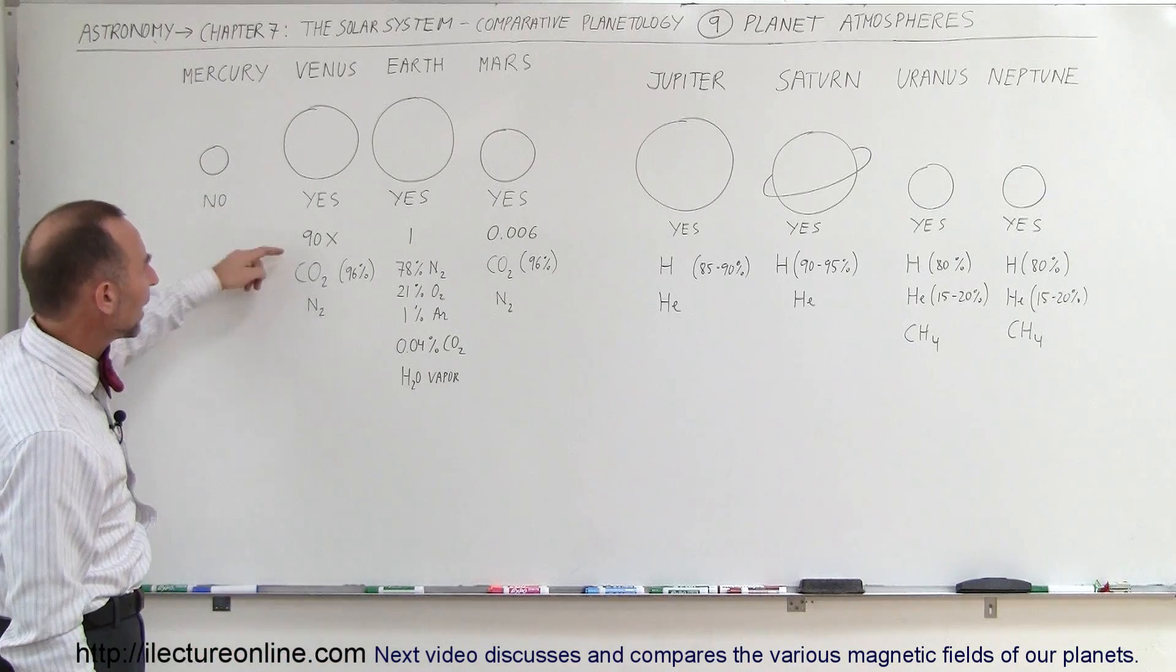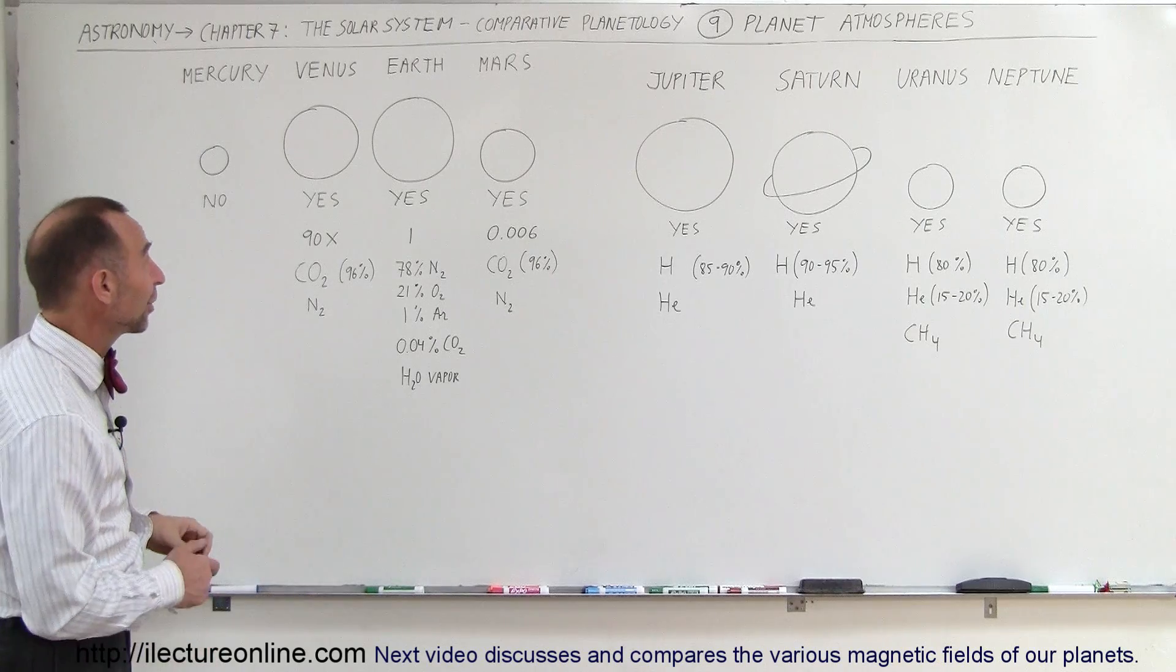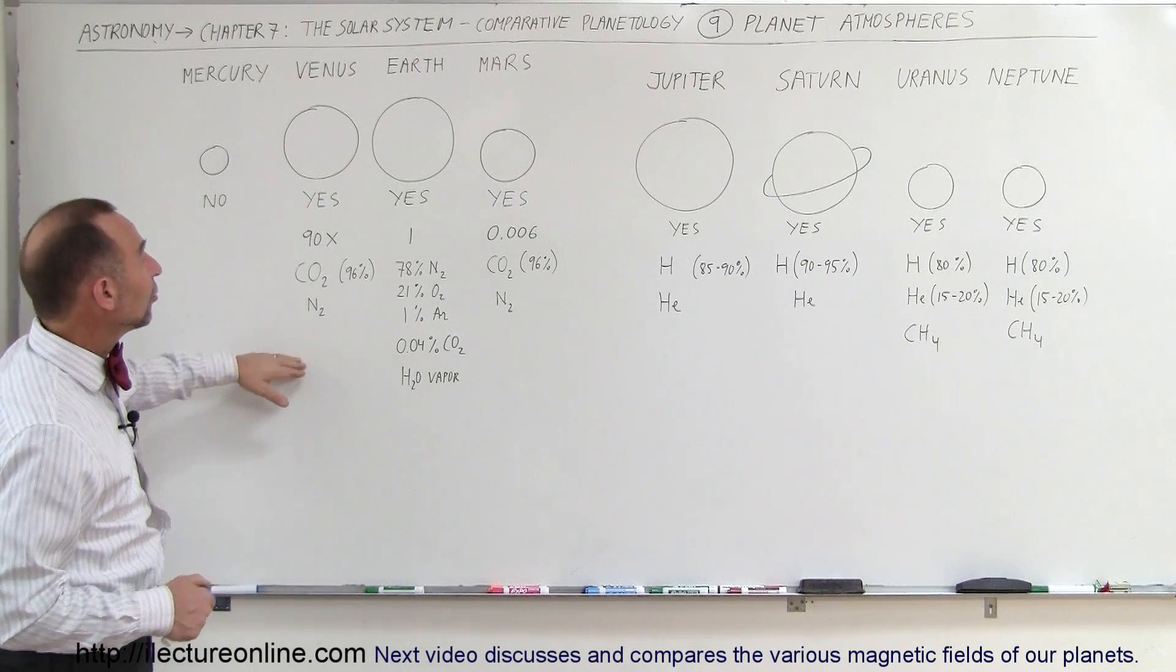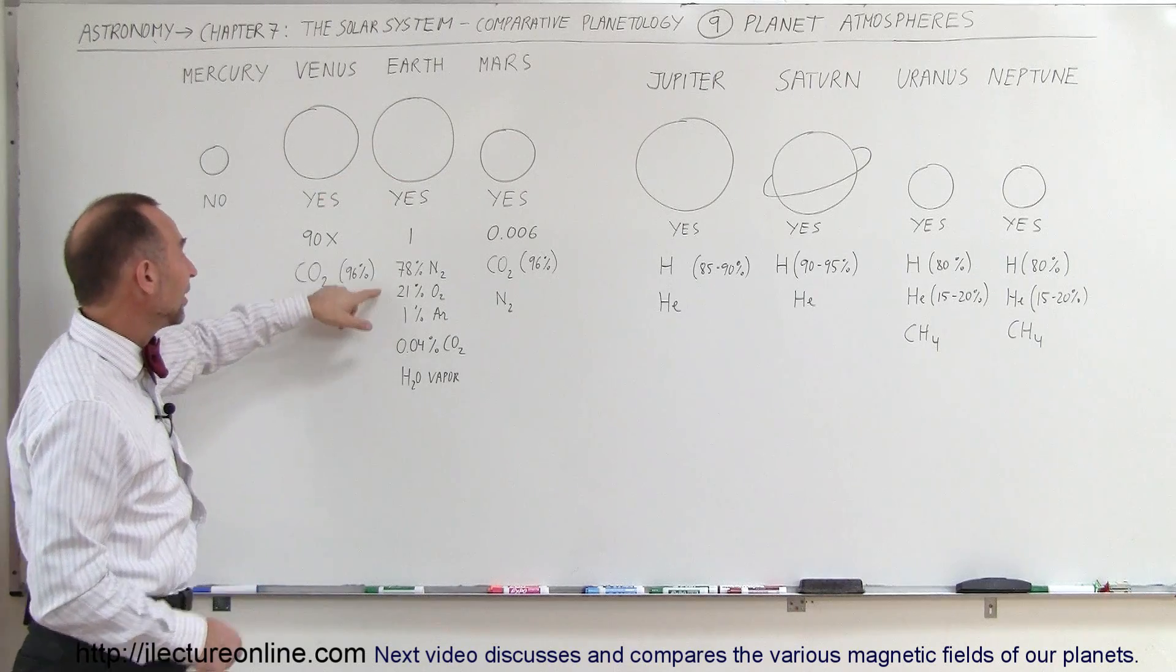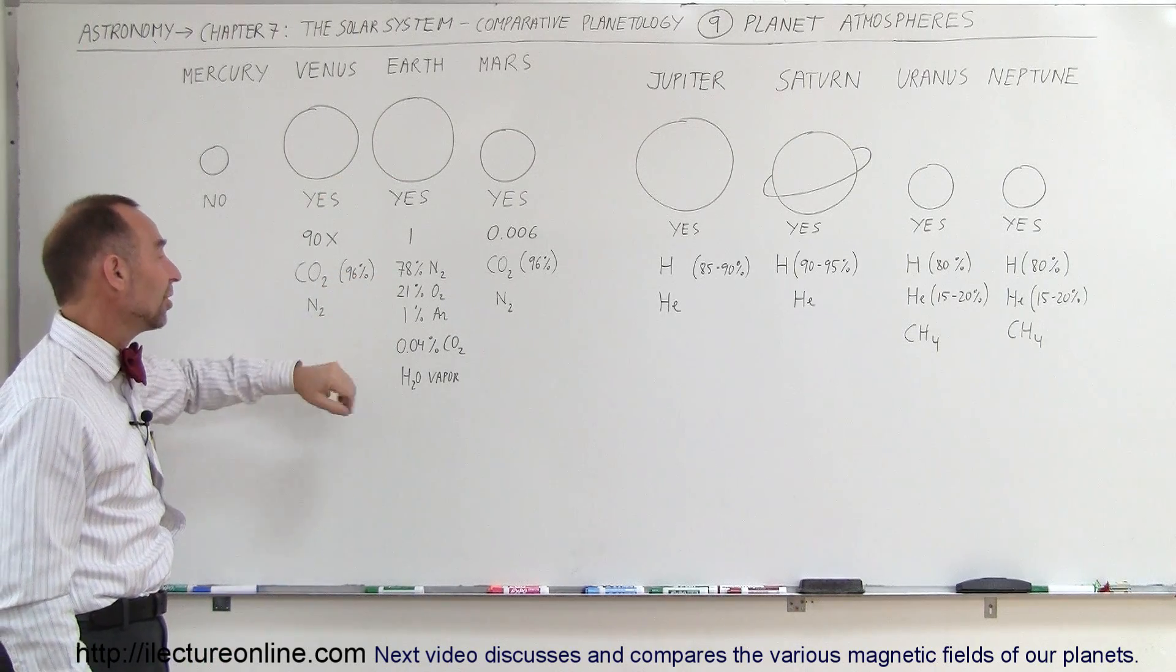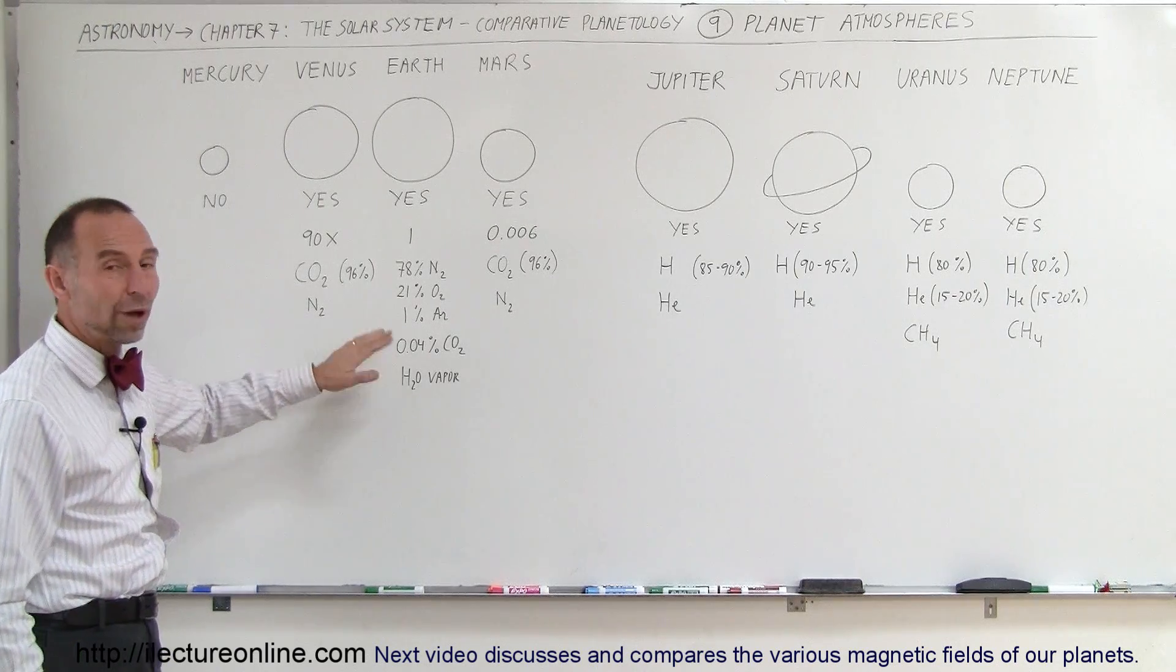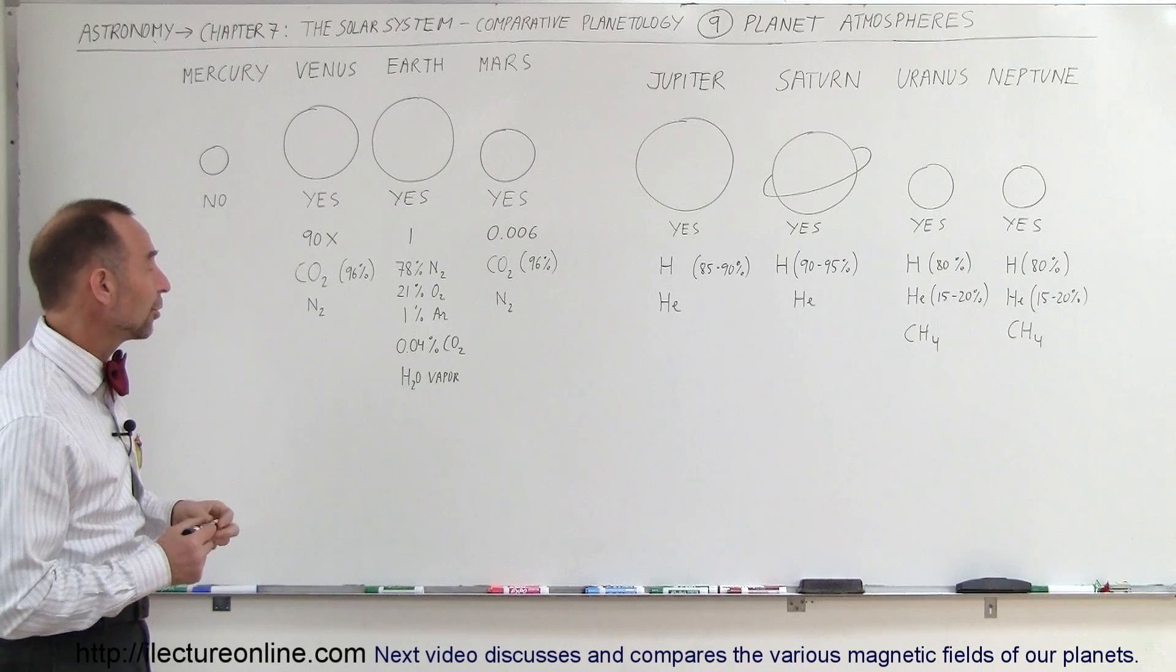As a matter of fact, when you think about it, it's more like more than 10,000 times the atmospheric pressure. That's quite a bit different. Notice the Earth has a very different atmosphere: 78% nitrogen, 21% oxygen, about 1% argon, and a very small amount of carbon dioxide. And of course, there's some water vapor.